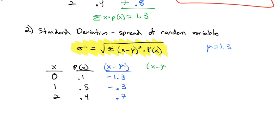But then our formula says we take that difference and we square it, make them all positive. 1.3 squared is 1.69. 0.3 squared is 0.09. And 0.7 squared is 0.49.